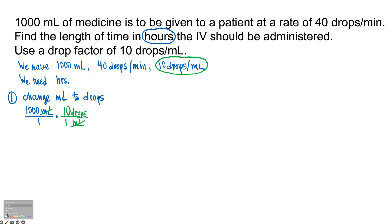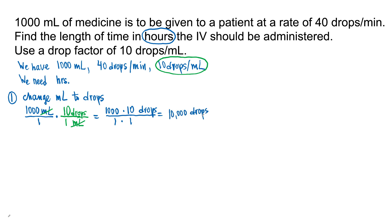Then we are going to multiply our fractions. 1,000 times 10 drops over 1 times 1. Basically you are multiplying here: 1,000 times 10 drops will be 10,000 drops. Now, how can we get to hours? We have this conversion factor: 40 drops per minute — that will help us connect to time.